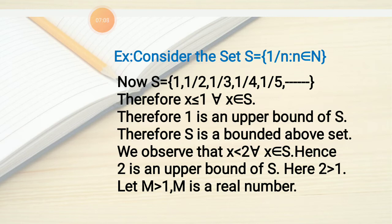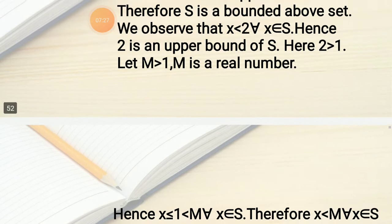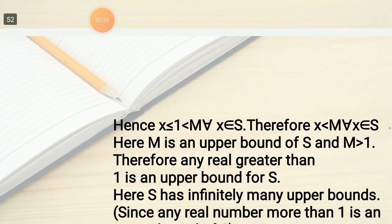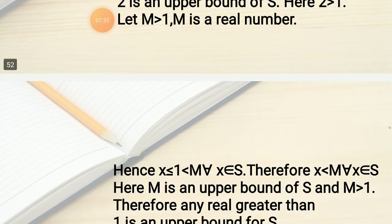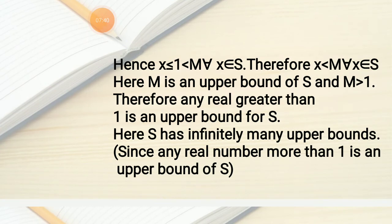We also observe that X < 2 for all X ∈ S, hence 2 is also an upper bound. Whenever M > 1, since X ≤ 1 and 1 < M for all X ∈ S, we get X < M for all X ∈ S, so M is also an upper bound. Therefore any real number greater than 1 is an upper bound of S, and S has infinitely many upper bounds.